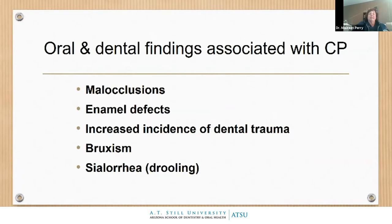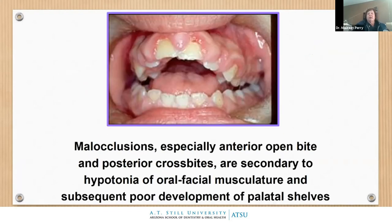Oral and dental findings in CP include malocclusions, enamel defects, increased incidence of dental trauma, bruxism, and drooling. The typical malocclusion presents with an anterior open bite and posterior cross bites, secondary to hypotonia of the facial musculature. The palatal shelves don't develop correctly, and tongue thrust makes correcting malocclusions very difficult — that tongue just really wants to come right out.